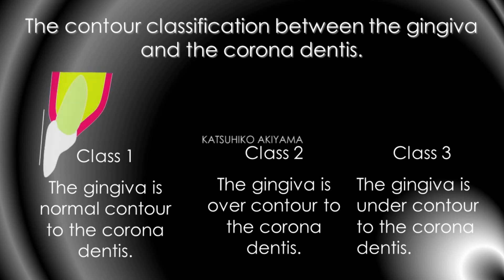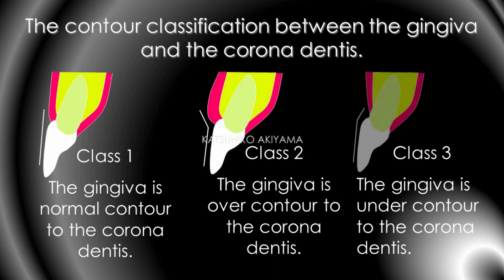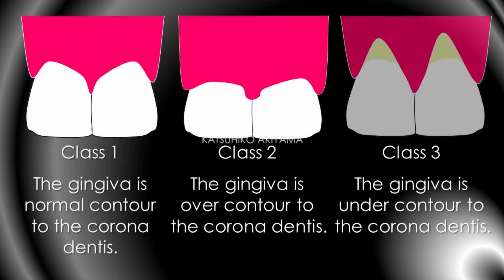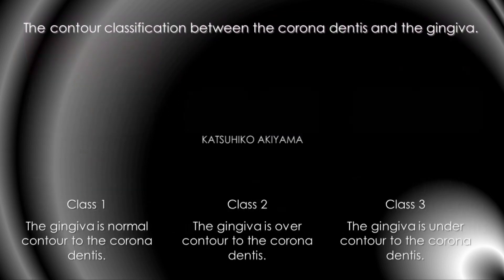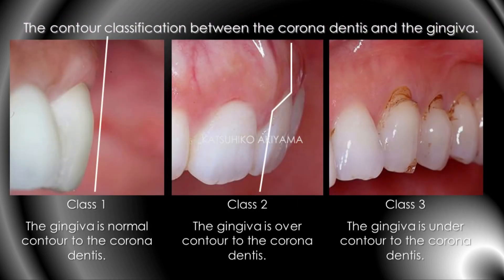Class 1: the gingiva is normal contour to the corner dentition. Class 2: the gingiva is over contour to the corner dentition — we call this a gummy smile. Class 3: the gingiva is under contour to the corner dentition — this is called recession. Class 1 is normal contour, Class 2 is over contour, Class 3 is under contour.